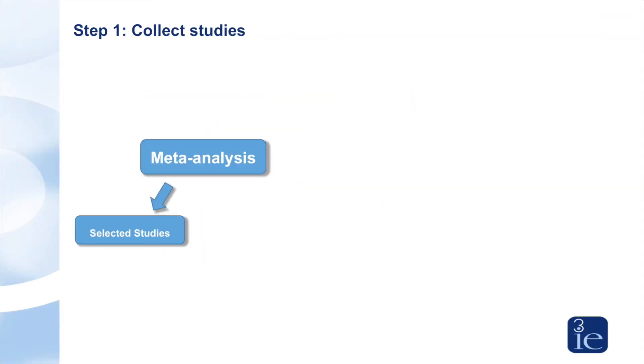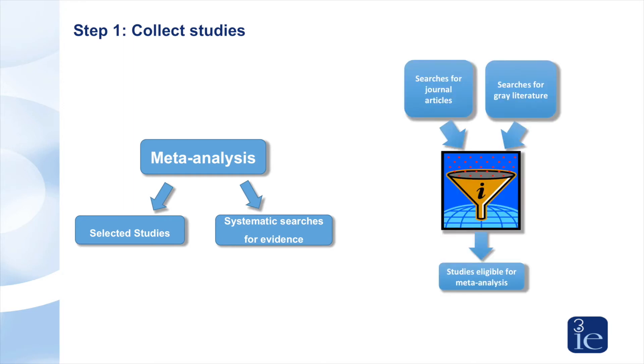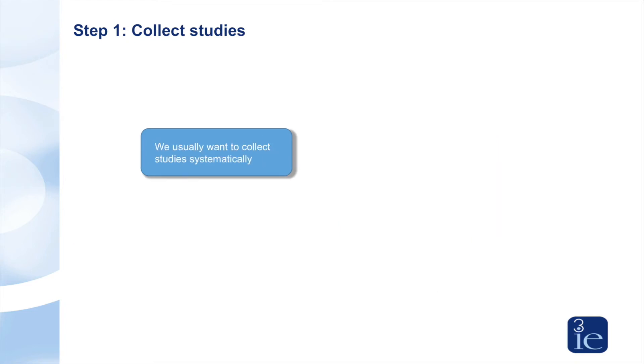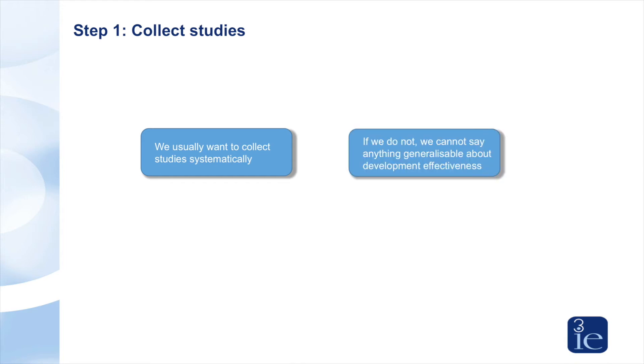Meta-analysis may be done for selected studies or as a result of systematic searches for evidence. We need to collect studies systematically — regardless of who has funded or implemented the program — if we want to learn lessons for development effectiveness. Where studies are not collected systematically we cannot be sure they are representative of the body of evidence. This is particularly problematic when meta-analyses exclude or do not search systematically for unpublished studies — that is, studies not published in peer-reviewed journals — as the lessons learned may be biased.